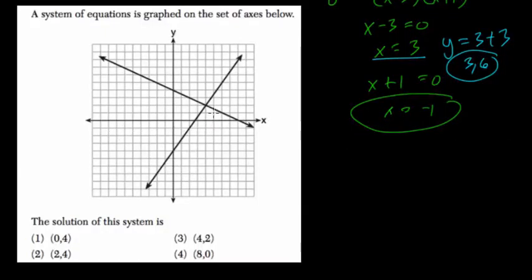What's the solution to the system? Well, that means where do the lines cross, right? That's a nice easy question. 1, 2, 3, 4, then up to — the answer is 4, 2.